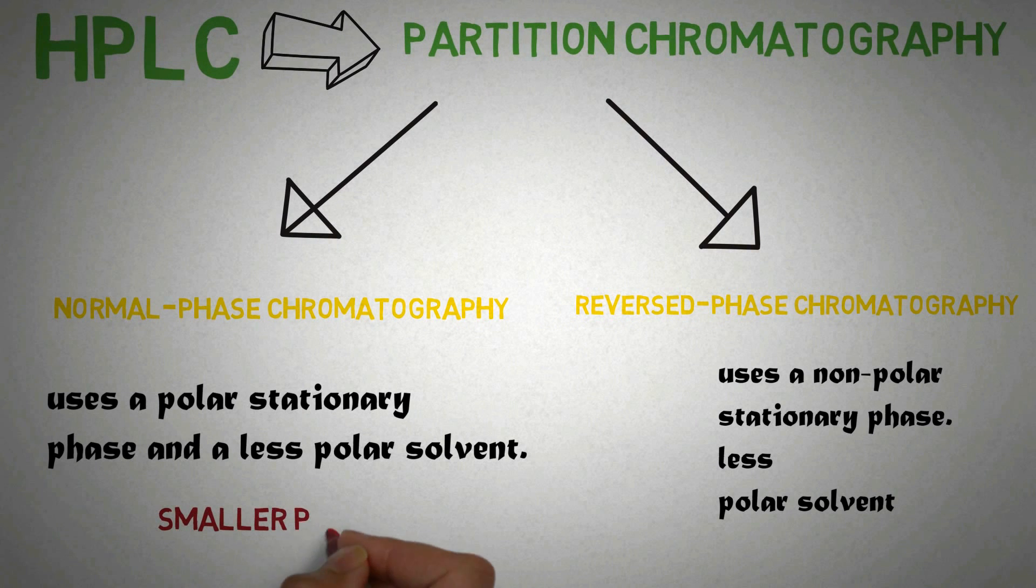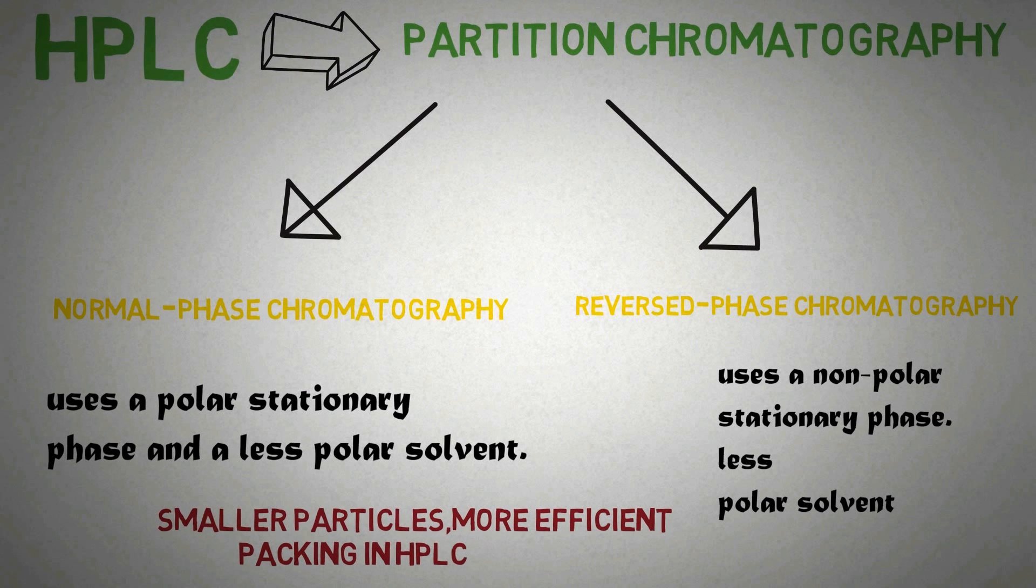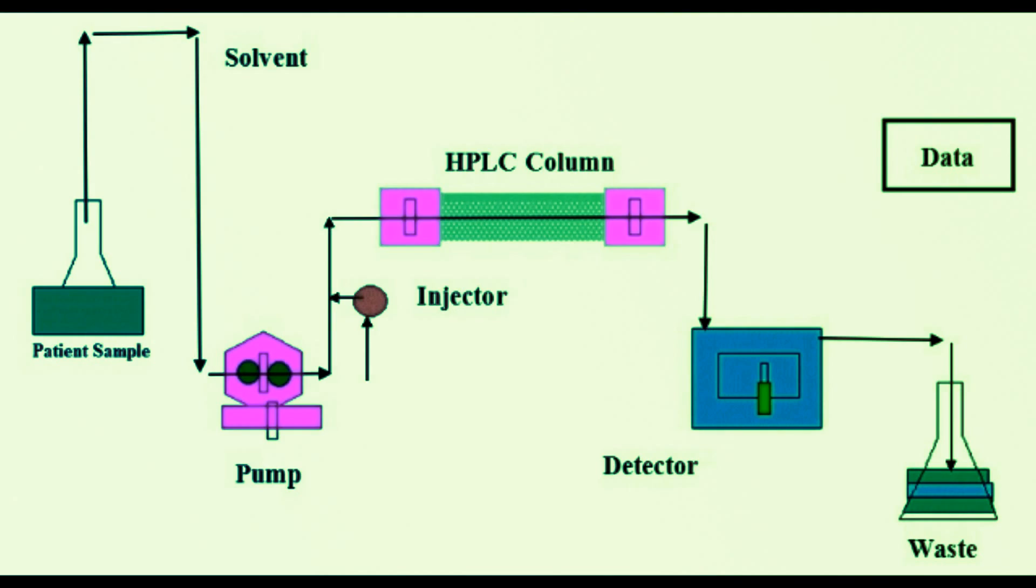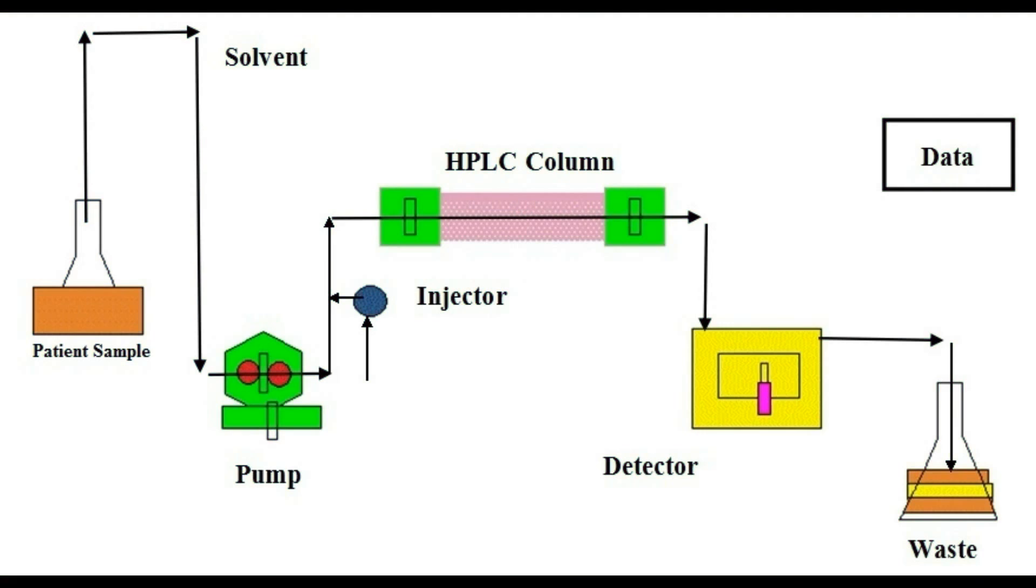Smaller particle size is used for adjustment in HPLC for better performance and better packing to sustain high amounts of pressure.